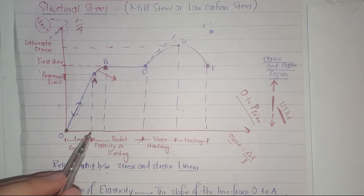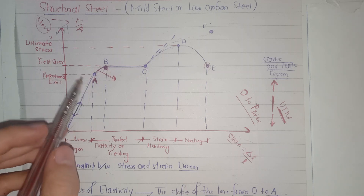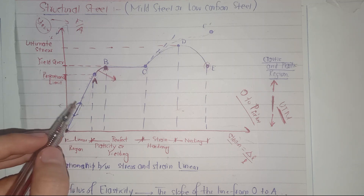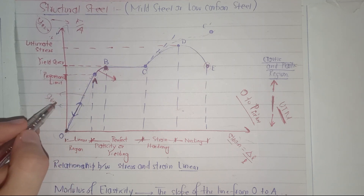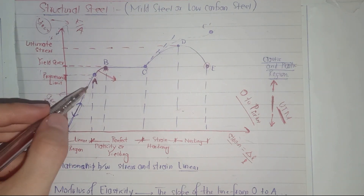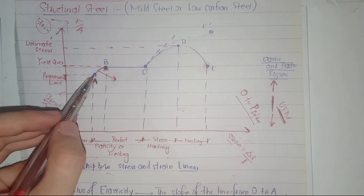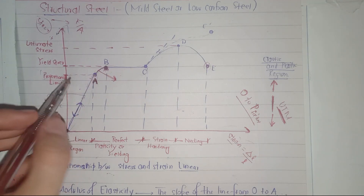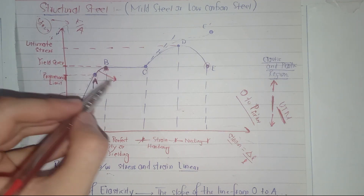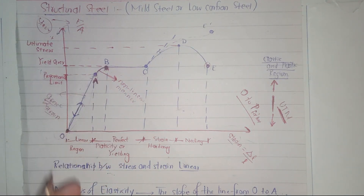From zero to point A, we have a linear region, and the corresponding y-ordinate is called the proportional limit. If you apply a load such that the stress produced in the body is below the proportional limit, it is going to behave in a linear manner — that is, stress is directly proportional to strain. If we apply a load in this region and then unload the material, it is going to return to its original position. Beyond the proportional limit, the material will behave in a non-linear manner — stress is not going to be proportional to strain.